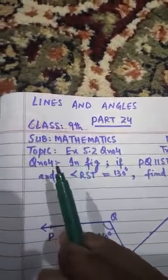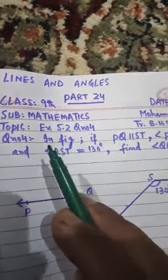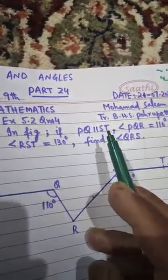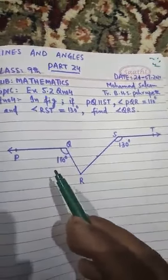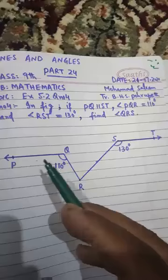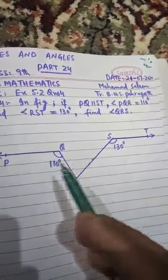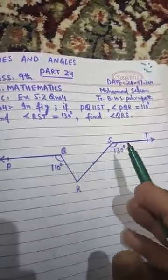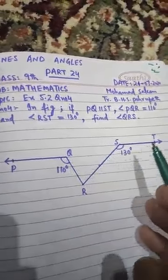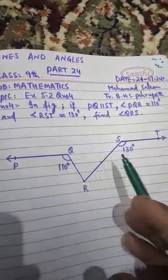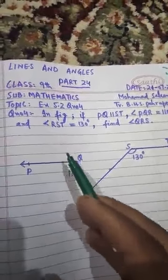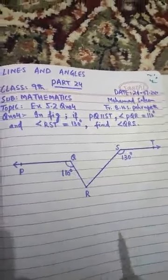Now let's read out question number 4. In the figure, PQ is parallel to ST. It is given that PQ is parallel to ST. Although they look to be far away from each other, if we extend PQ and ST — PQ towards the right and ST towards the left — they will keep the same distance between them. That is why they are parallel.